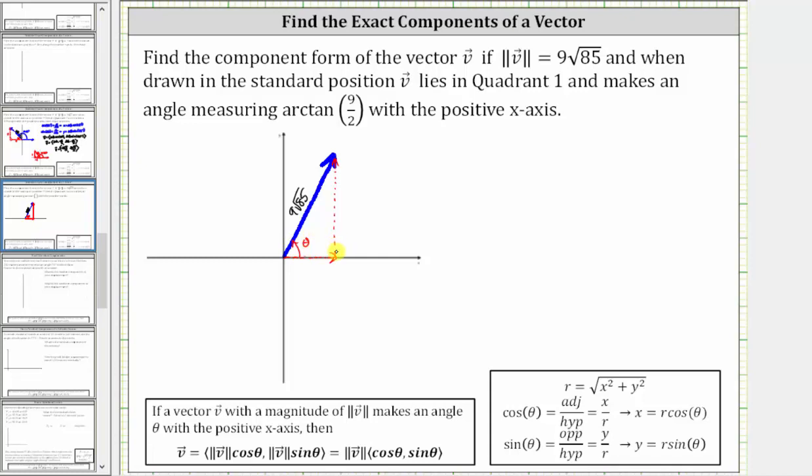We know it measures arctan(9/2). So using this reference triangle, we might be thinking we can label the opposite side 9 and the adjacent side 2, but that's not true because it could be any multiple of the ratio of 9 to 2. So let's label the opposite side 9n and the adjacent side 2n.